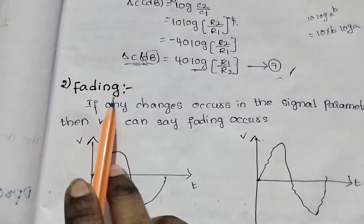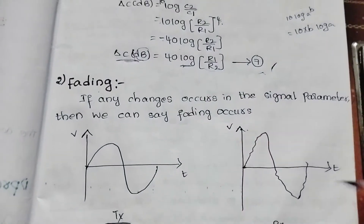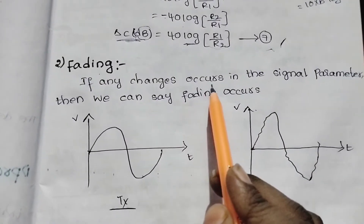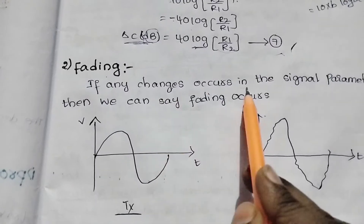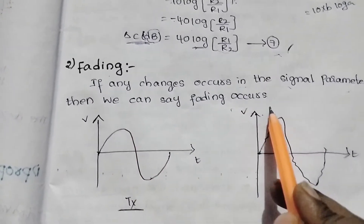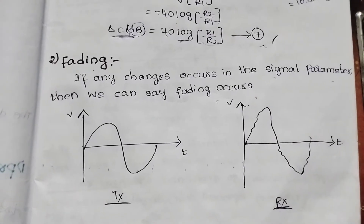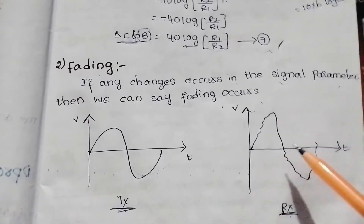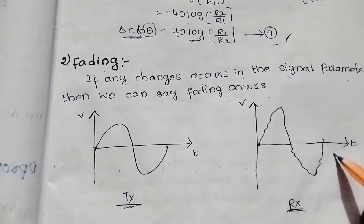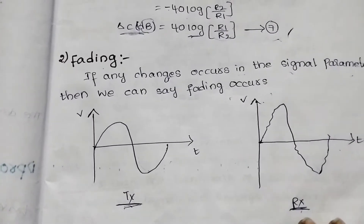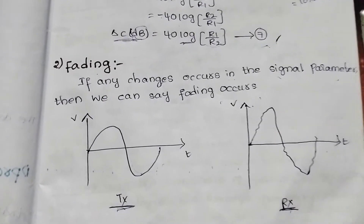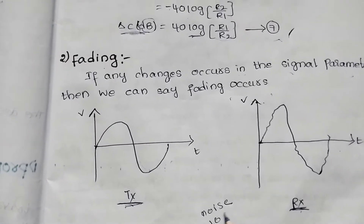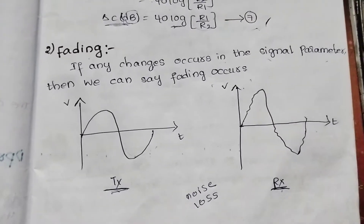Now the second topic is fading. Fading occurs when any change occurs in the signal parameters. Changes to the signal — from transmitter to receiver — result in fading. At the receiver, if additional noise is added, it changes the signal. So we know fading occurs when there is a change in signal amplitude, phase, or delay.